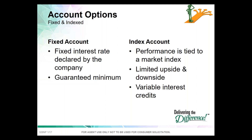The monies are not invested in the index; the underlying index is used to determine the interest rate that's credited. The indexed account will have some limit on the upside and a limit on the downside. With an indexed account, you'll get interest credits that may vary — a little higher, a little lower at times. Indexed Universal Life is not scary; it's just like a fixed UL. If you want it to behave like a fixed UL, just put all the monies in the fixed account.